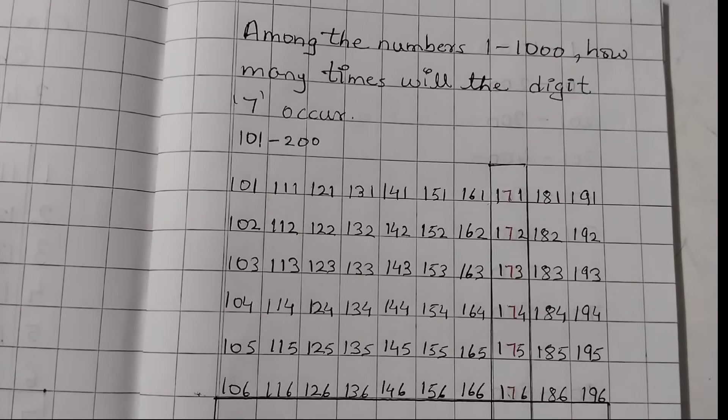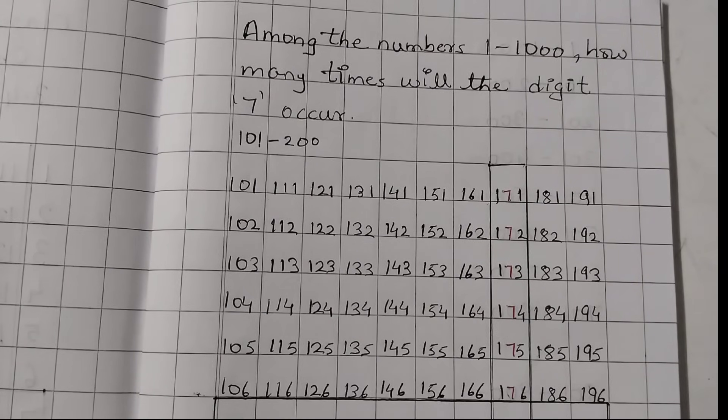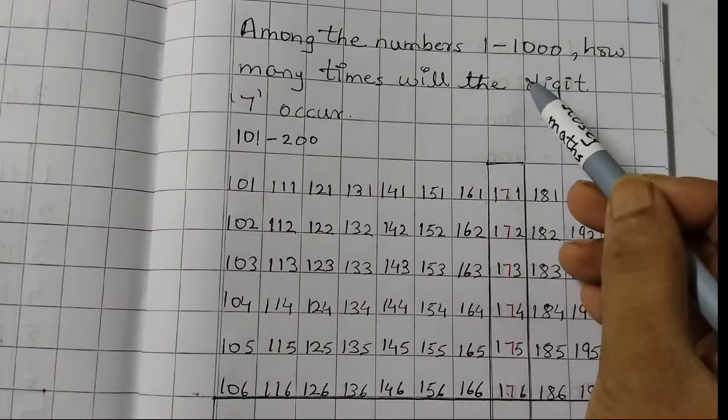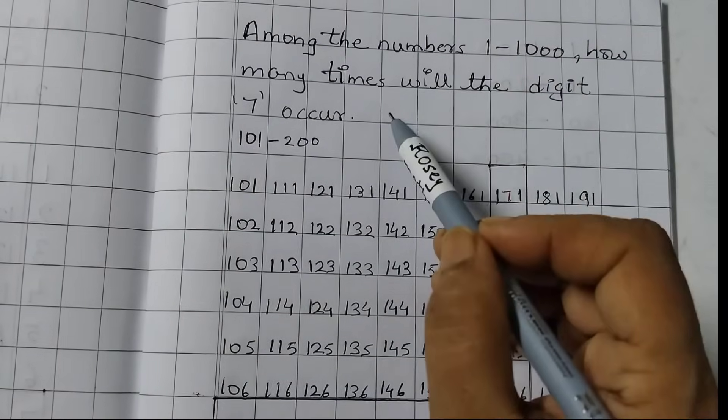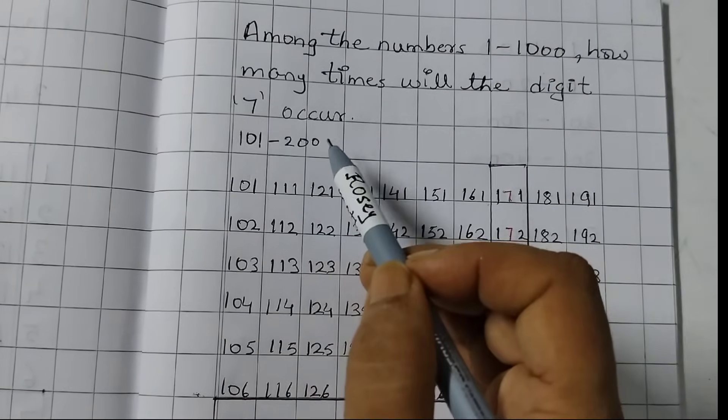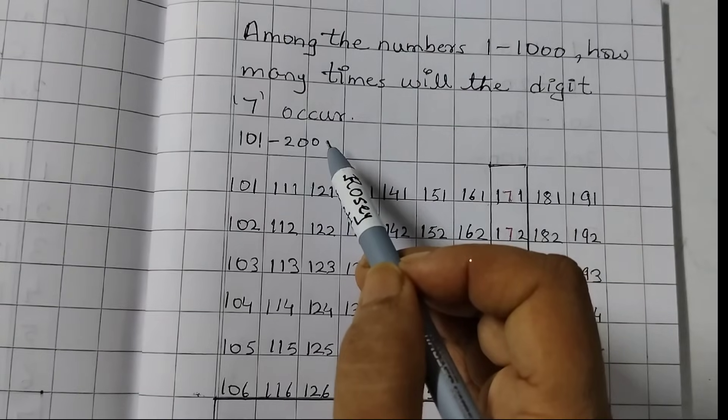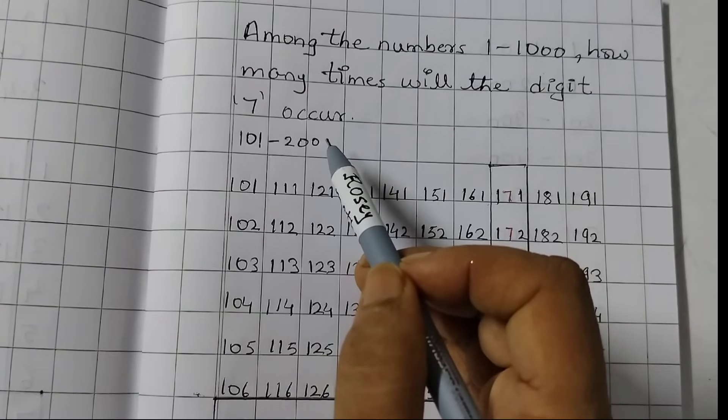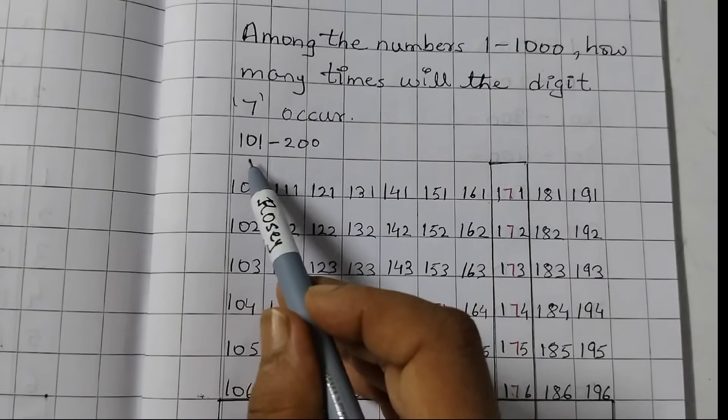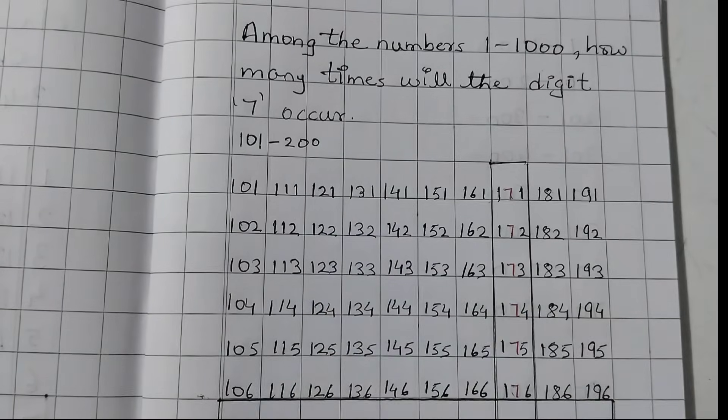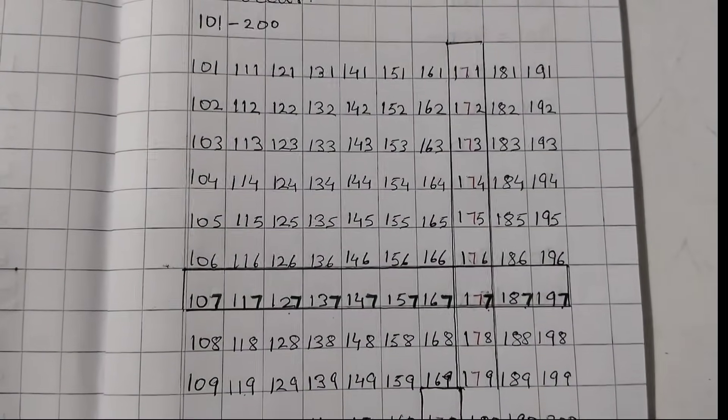The second part of the question is, among the numbers 1 to 1000, how many times will the digit 7 occur? So, we saw from 1 to 100 it was 20 times. Now, I have written the numbers 101 to 200, and we will check how many times 7 appears here.